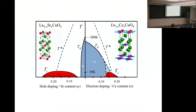I'll give you a little bit of experimental background. This is, in some sense, a basic problem of high-Tc superconductivity that many of us have been thinking about for too long. This is the phase diagram of the hole-doped, electron-doped, and hole-doped superconductors.